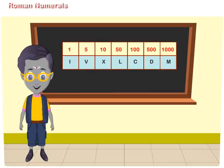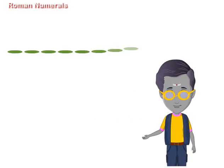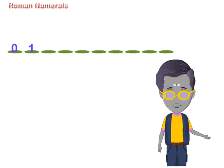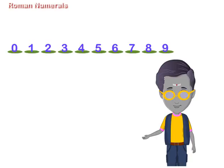Friends, we have learnt the method of writing numbers up to 10,000 by using 10 numerals: 0, 1, 2, 3, 4, 5, 6, 7, 8 and 9.